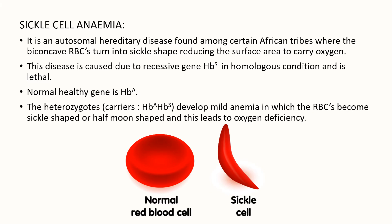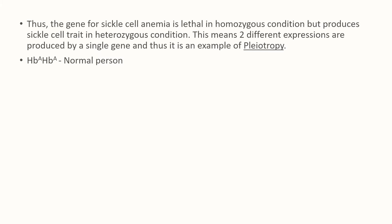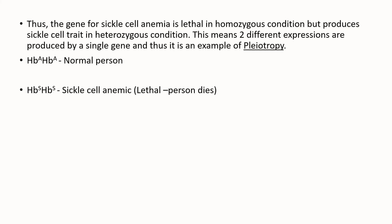People with heterozygous genes develop mild anemia in which the RBCs become sickle-shaped or half-moon shaped, leading to oxygen deficiency. The gene for sickle cell anemia is lethal in homozygous condition, but produces sickle cell trait in heterozygous condition. This means two different expressions are produced by a single gene — sickle cell carrier and sickle cell anemic — and thus it is an example of pleiotropy.